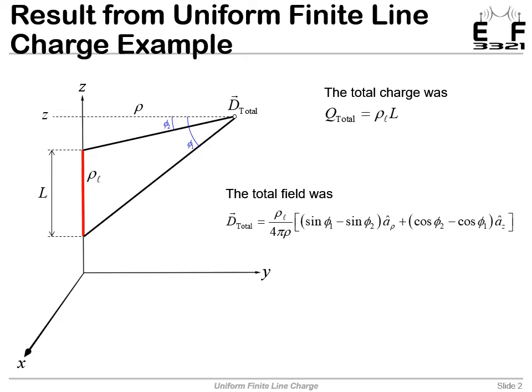We found the total charge to be the charge density times the length of the line. And we found this big expression for the total electric flux density. And we observed that it had a one over rho dependence. So as we walk away from our line charge, the magnitude of the d field decays with one over rho.